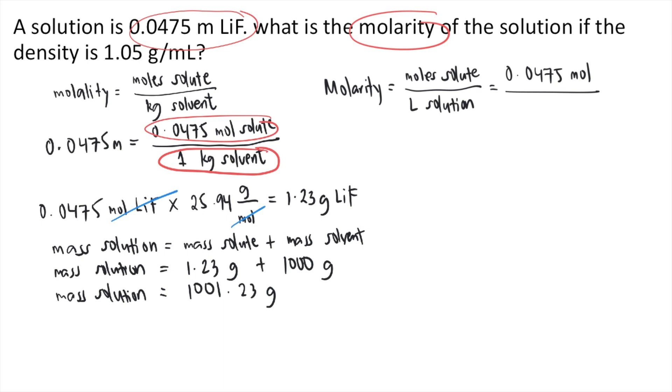Now after getting the mass of solution, we can solve the volume of the solution because we are given the density in the problem. The mass of solution is 1,001.23 grams. Let's use our density, which is 1.05 grams for every 1 ml. Then we can convert ml into liters. We know that 1 liter has 1,000 ml. So the ml's would cancel out. If you solve this in your calculator, this equals 0.954 liters.